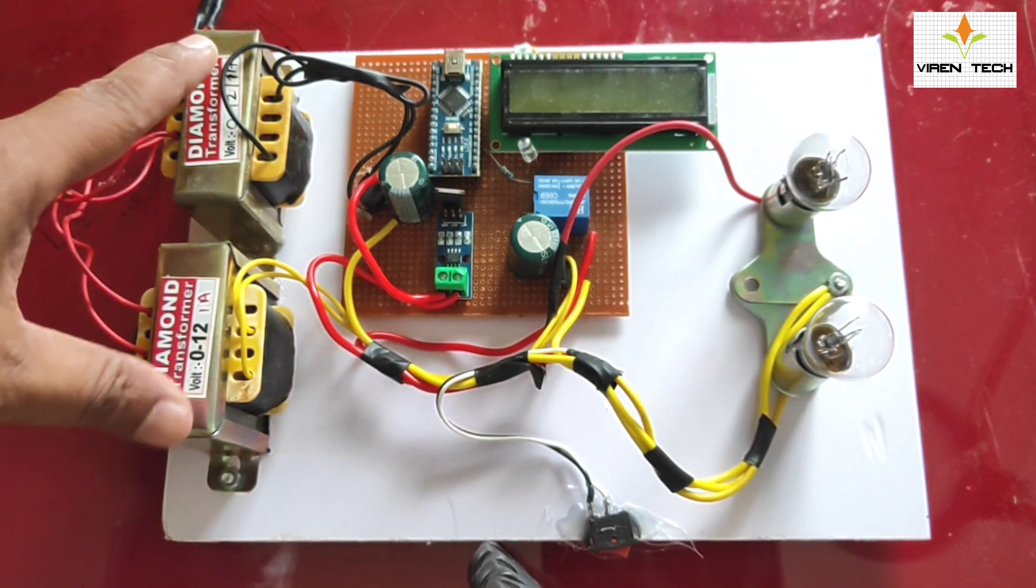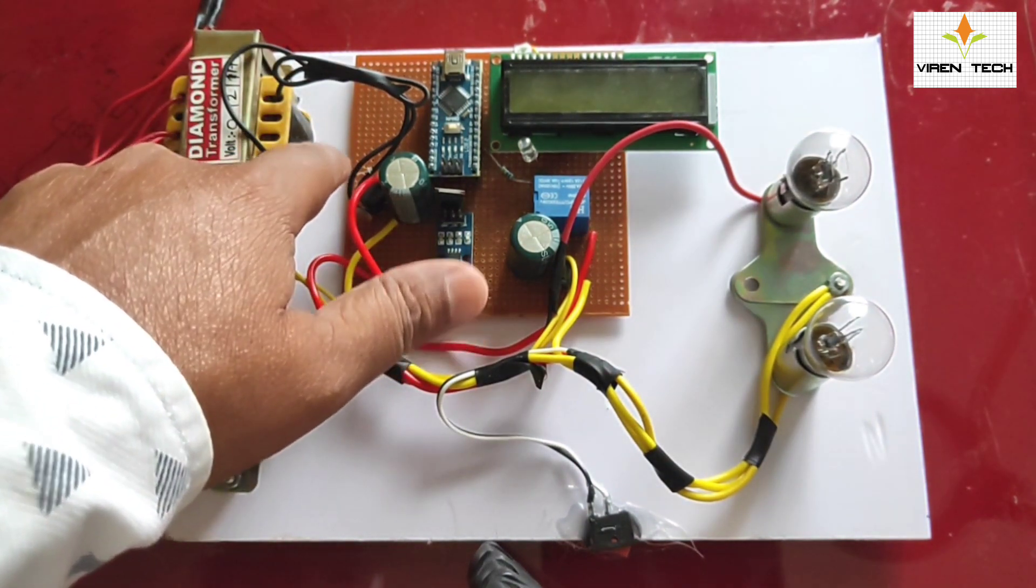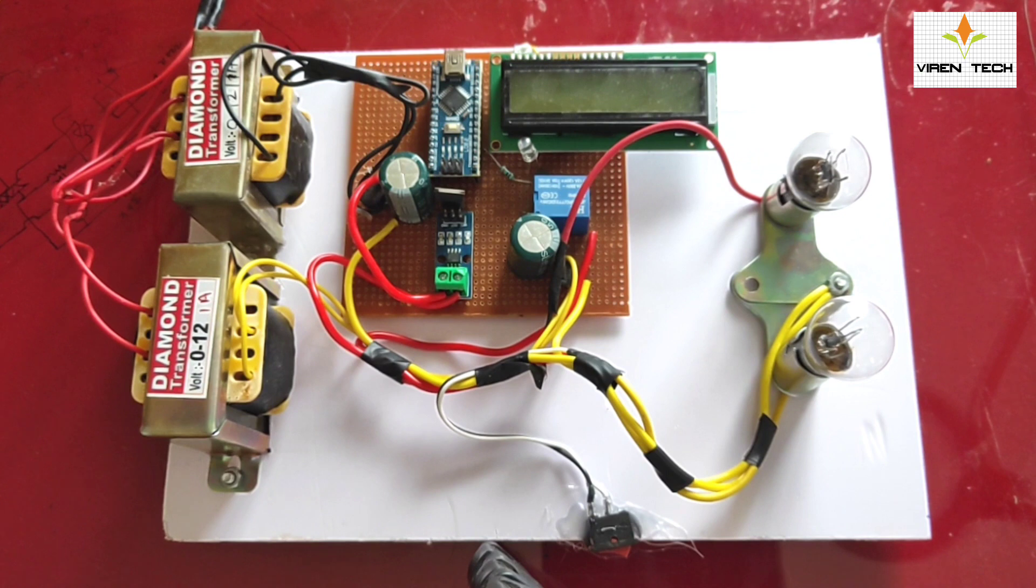These transformers convert 230 Watt AC to 12 Watt and these rectifiers and filters will convert 12 Watt AC to 12 Watt DC.